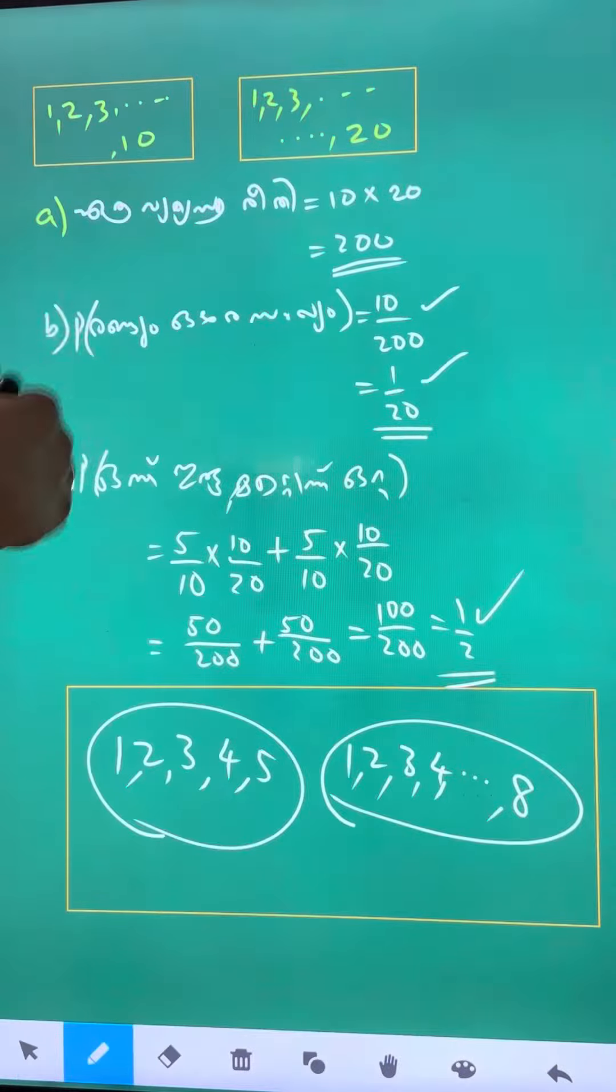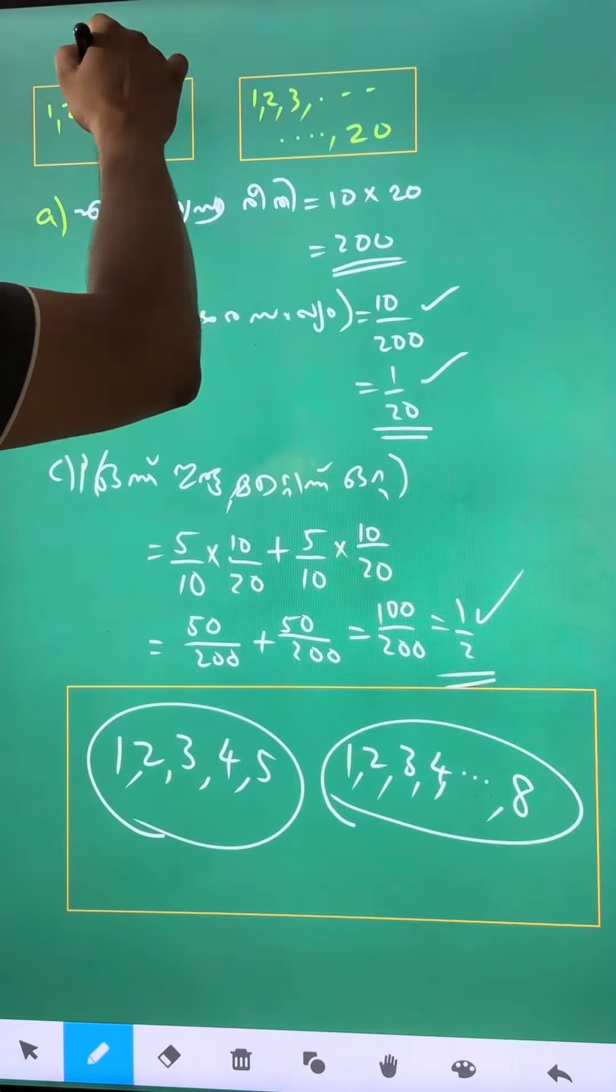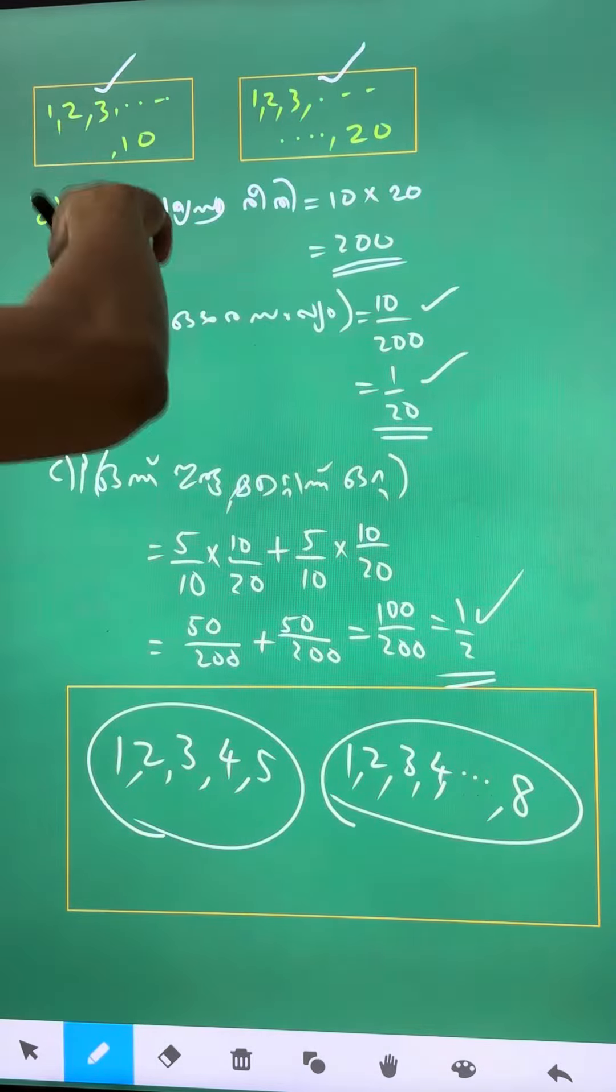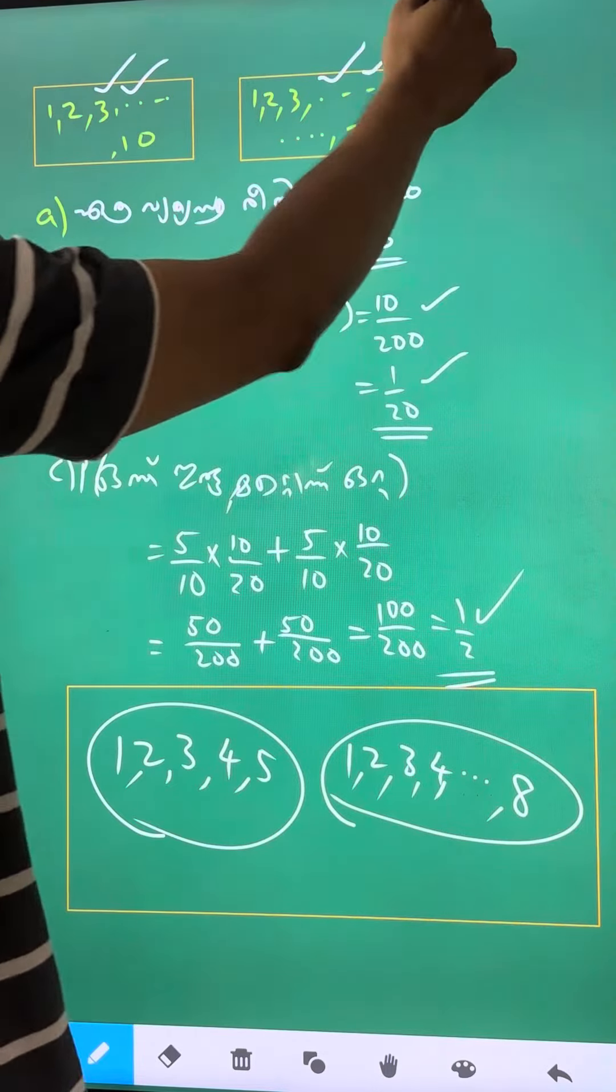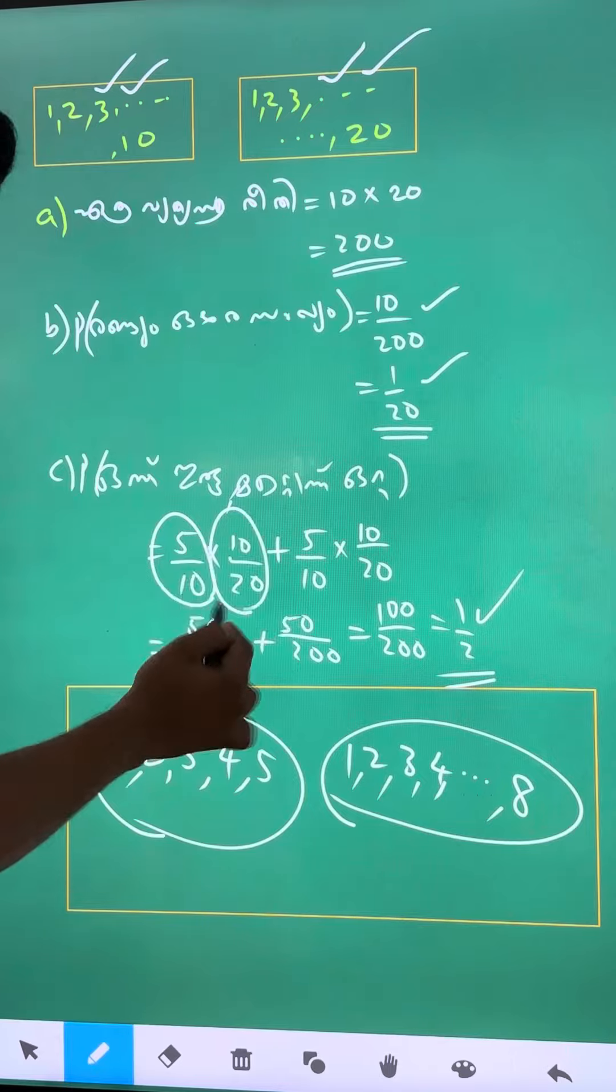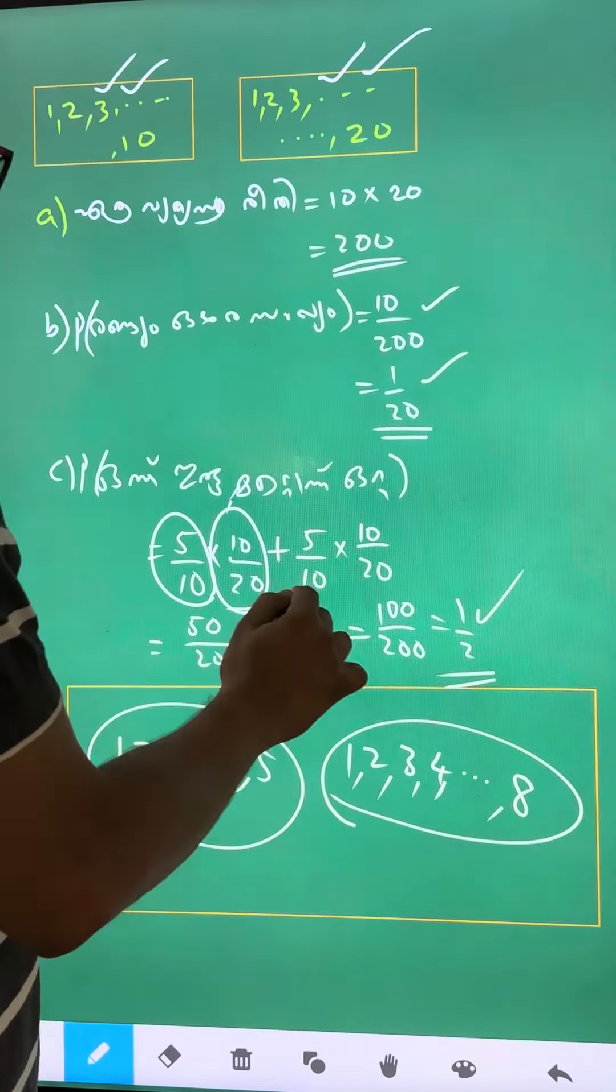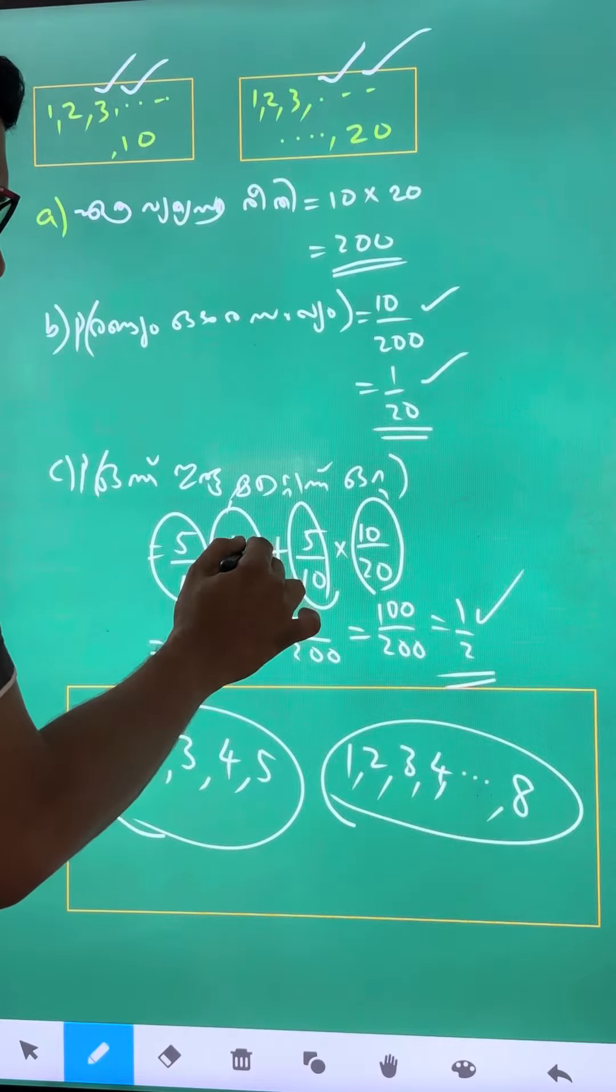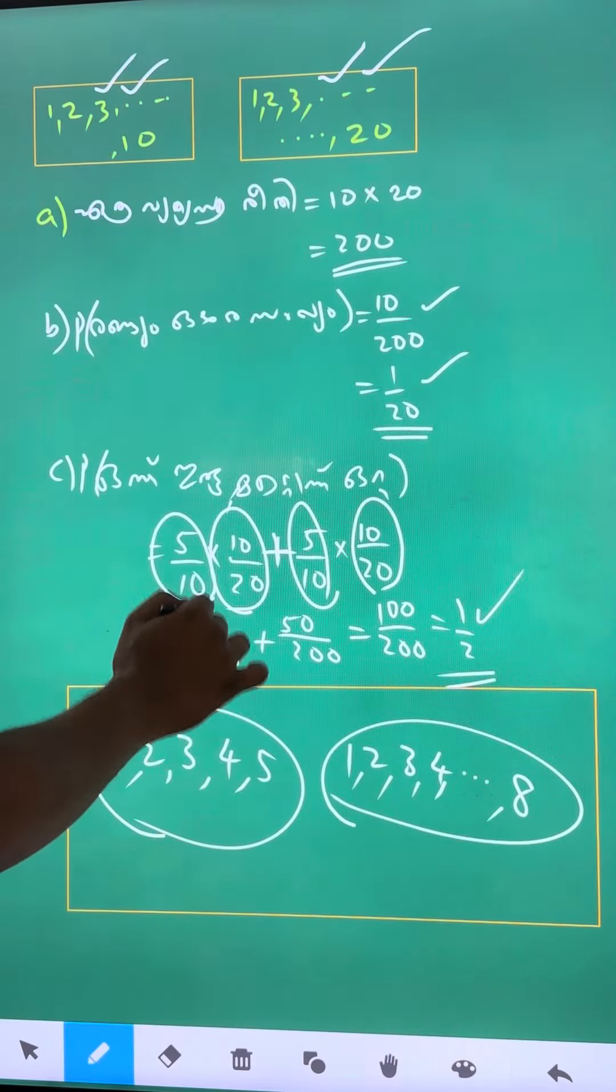One is odd and the other is even. Then 10 by 20. Then I'll divide by 2. Now I'll divide 100 by 200.